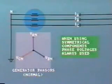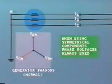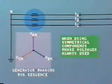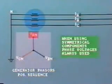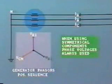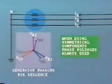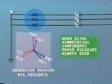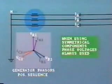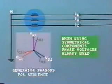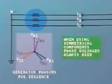When studying symmetrical components, phase voltages are always used — that is, line to neutral or line to ground. We indicate the positive sequence voltages on our diagram by using the subscript one. For example, VA1, VB1, and VC1. With a balanced load, the current phasors produced by the generator are also similarly balanced, once again marked IA1, IB1, and IC1.